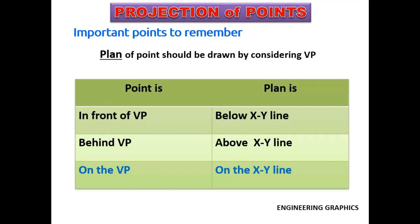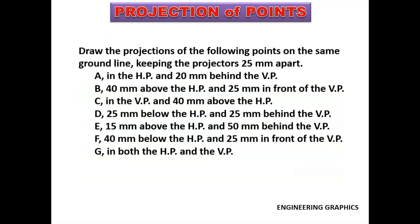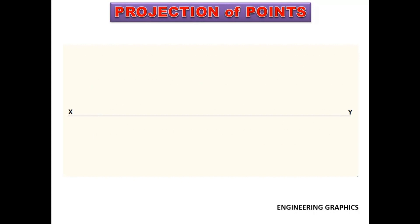Let us see an example problem. Draw the projections of the following points on the same ground line, keeping the projectors 25 mm apart. A: in the HP and 20 mm behind the VP. B: 40 mm above the HP and 25 mm in front of the VP. C: in the VP and 40 mm above the HP. D: 25 mm below the HP and 25 mm behind the VP. E: 15 mm above the HP and 50 mm behind the VP. F: 40 mm below the HP and 25 mm in front of the VP. G: in both the HP and the VP.